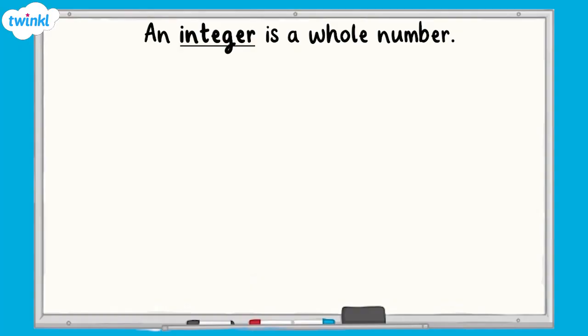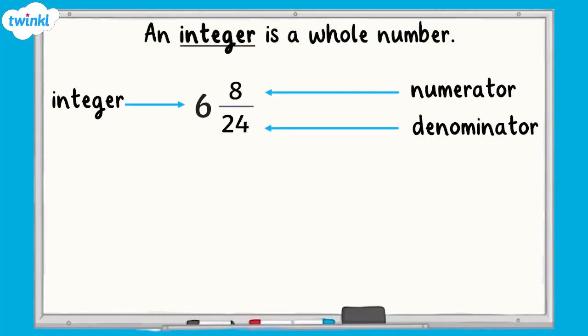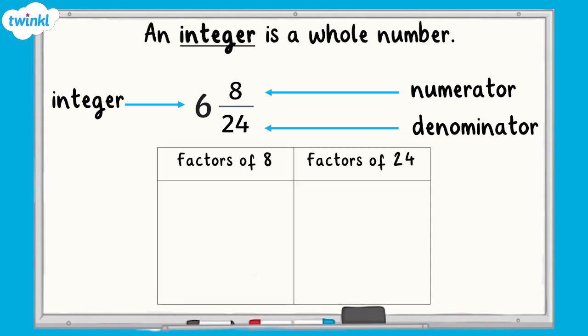Let's take a look at how we might simplify a mixed number. It's important to remember when we simplify a mixed number that the integer does not change. An integer is a whole number. So, if we had the mixed number 6 and 8 twenty-fourths, we would leave the integer as it is and find the factors of both 8 and 24.